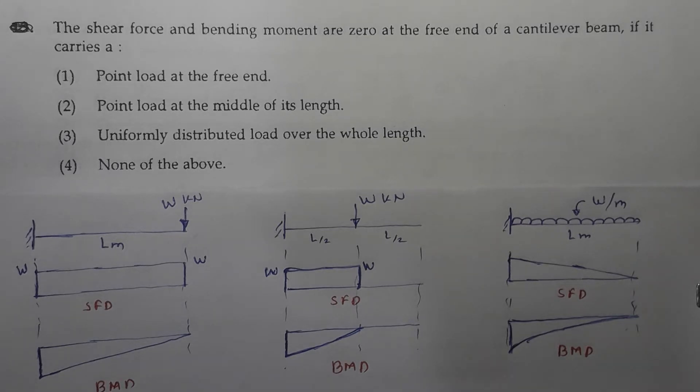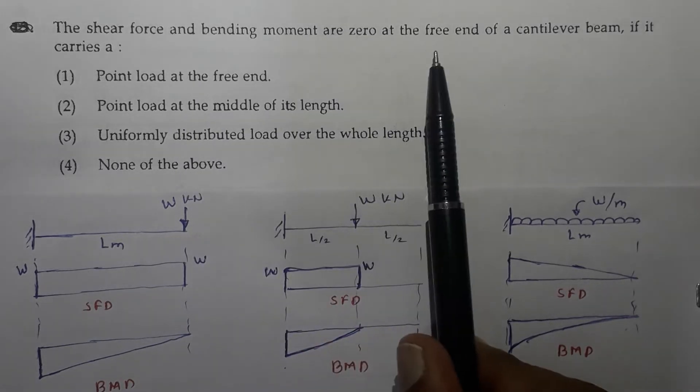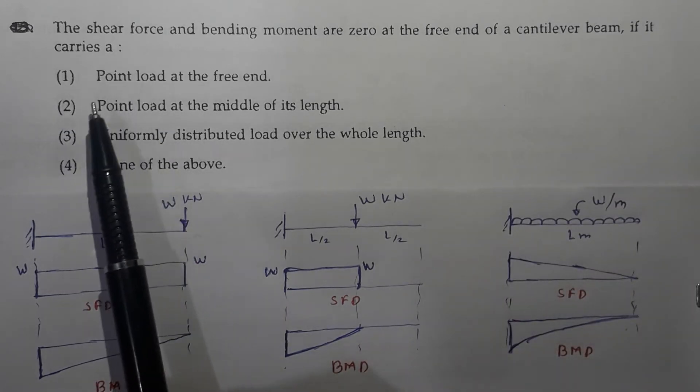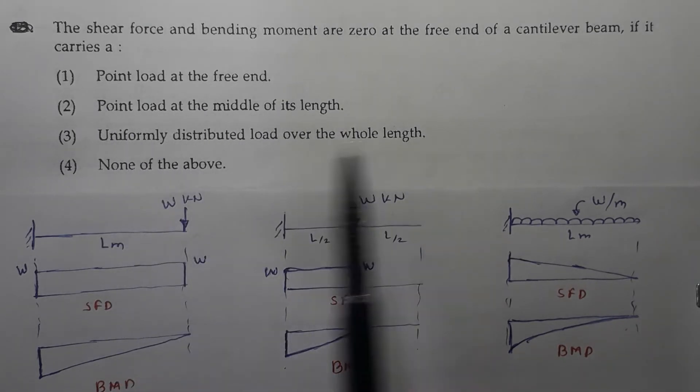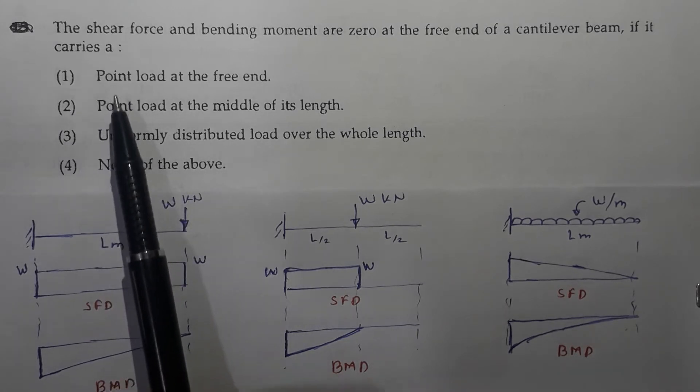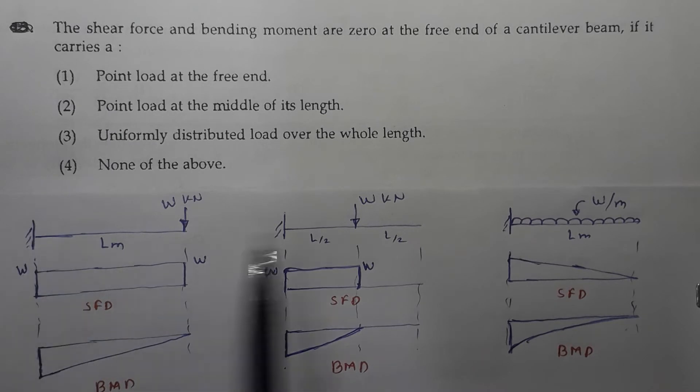Question number one: the shear force and bending moment are zero at the free end of a cantilever beam if it carries a point load at the free end, point load at the middle of its length, uniformly distributed load over the whole length, and none of the above. Now, as far as the first three points are considered, I have drawn the figures for all these three cases.